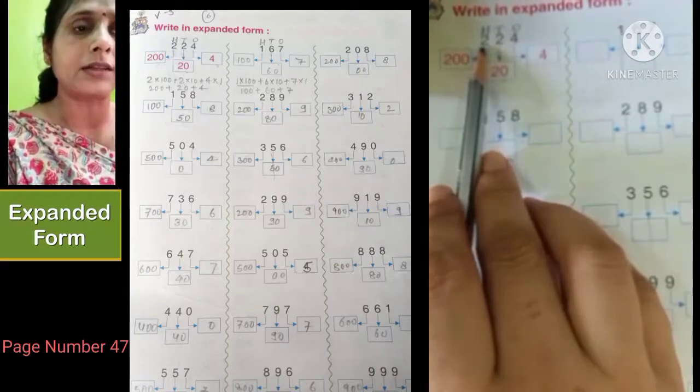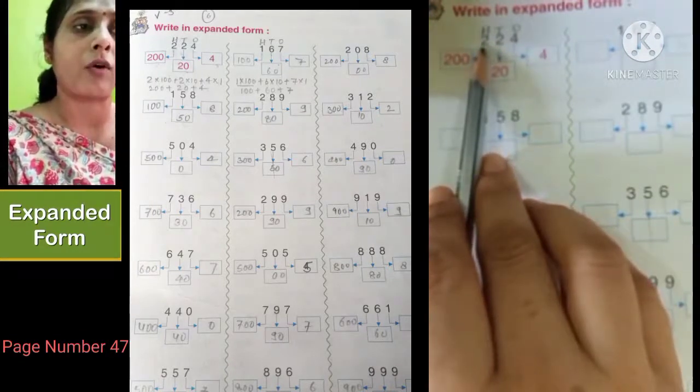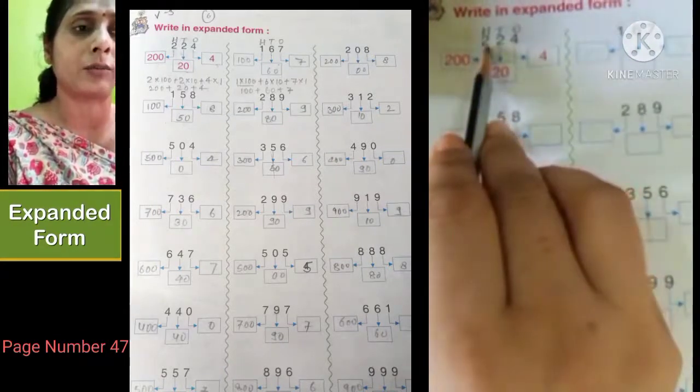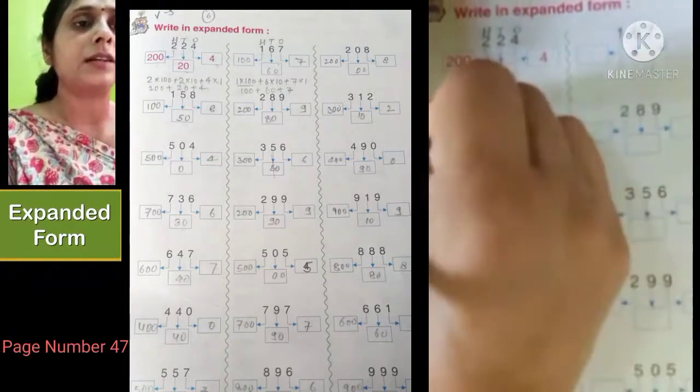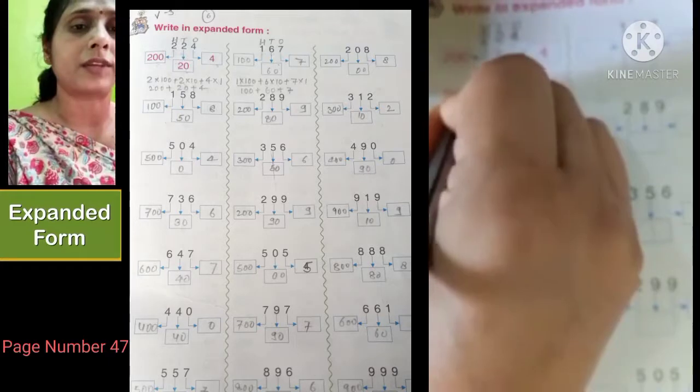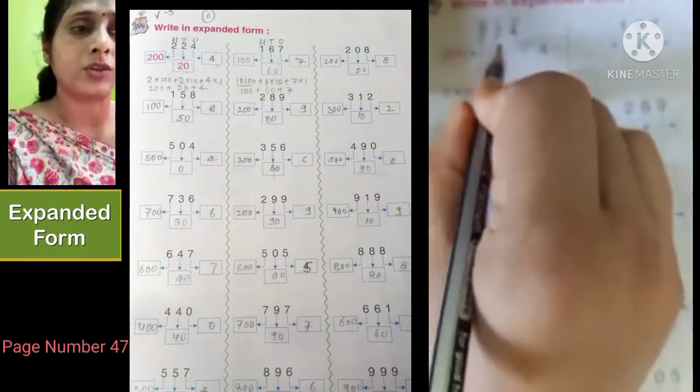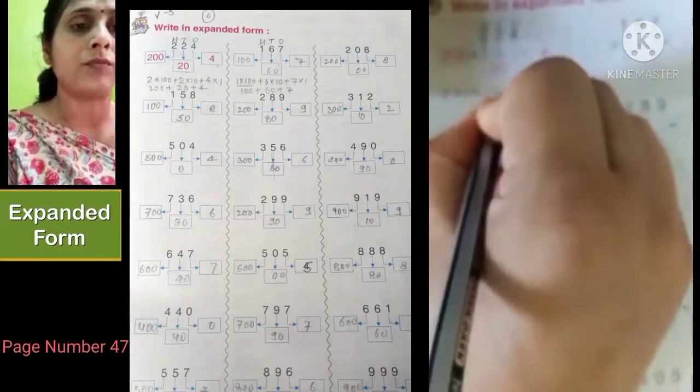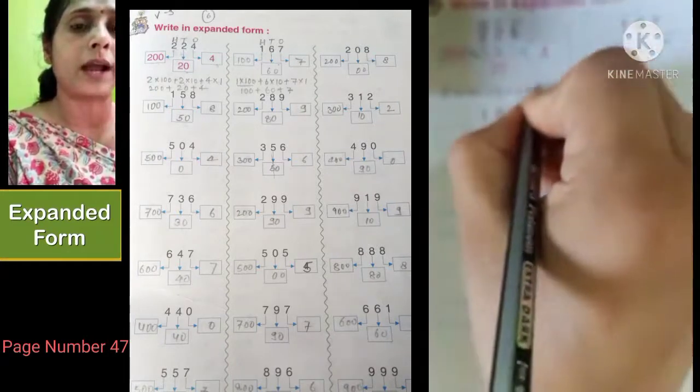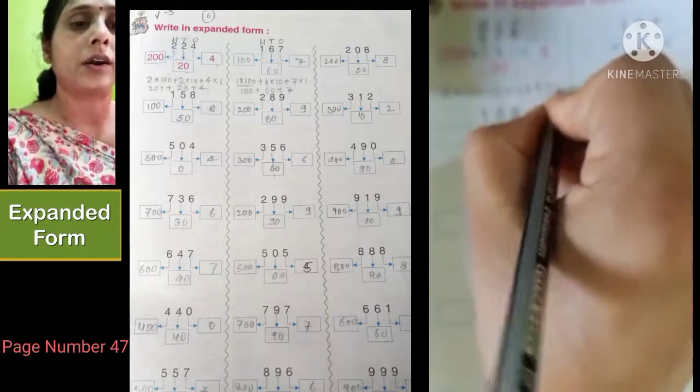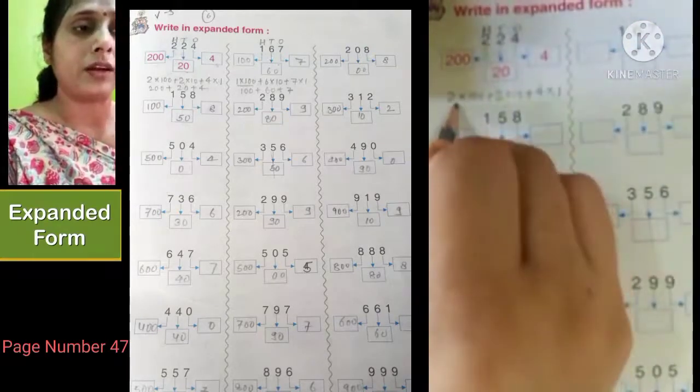At the hundreds position 2 is given. It means 2 will be multiplied with 100. At the place of tens, 2 is given, so we will multiply 2 with 10. And at ones place, 4 is given, so we will multiply 4 with 1.